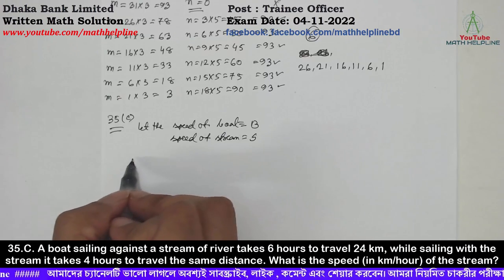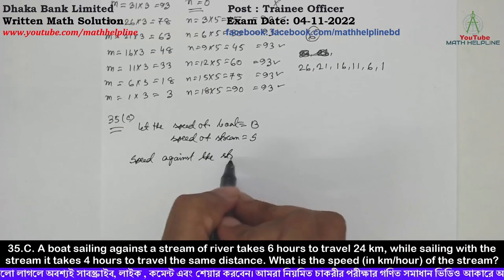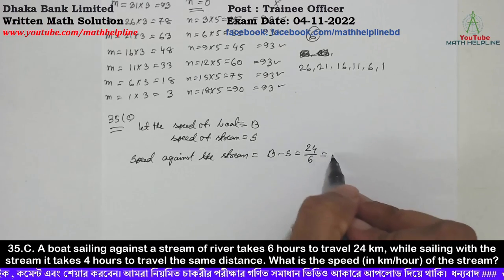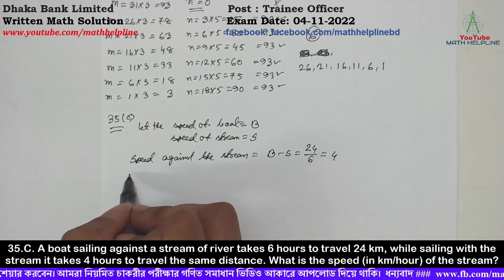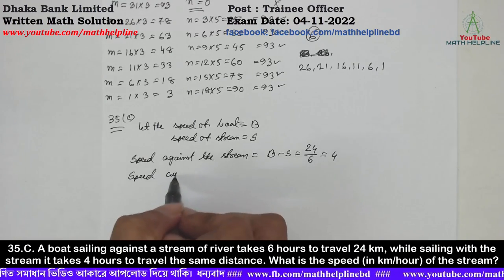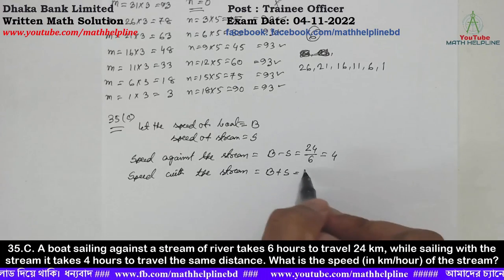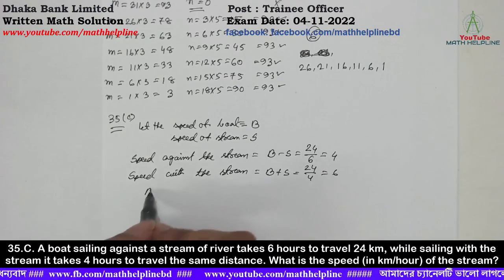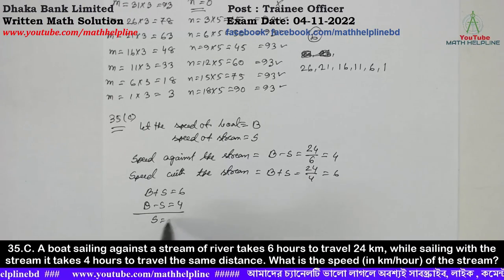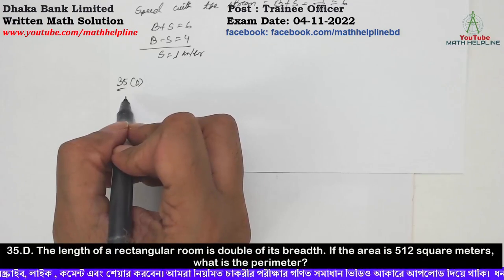Against the stream, speed = b minus s = 24 / 6 = 4. With the stream, speed = b plus s = 24 / 4 = 6. Solving: b plus s = 6 and b minus s = 4, therefore s = 1 kilometer per hour. That is the speed of the stream.